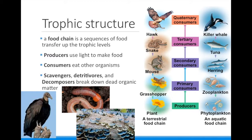Consumers are animals that have to eat other organisms to get food. There are several trophic levels of consumers. The first level is the primary consumers — they eat the producers, meaning that primary consumers only eat plants and are thus herbivores. The terrestrial primary consumer is the grasshopper, who eats the flower, and the aquatic primary consumer is the zooplankton, who eat the phytoplankton.